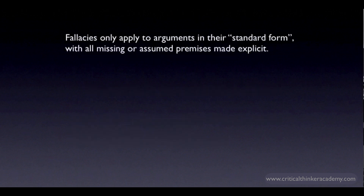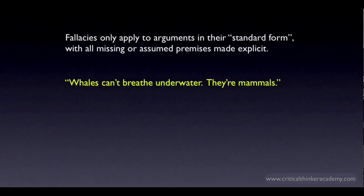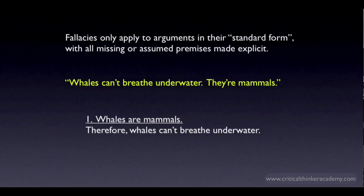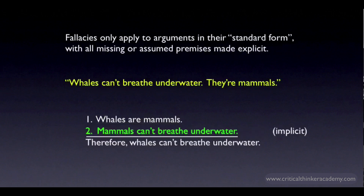An important point to remember about fallacies is that you can't judge an argument based on its superficial form as given, since we often leave out parts and rely on our audience to fill in the gaps. So, if I give an argument like this — whales can't breathe underwater, they're mammals — it would be unfair to say that it's bad because the logic is weak, since there's no stated connection between being a mammal and being able to breathe underwater. It would be unreasonable to evaluate the argument based on that interpretation. Why? Because it's obvious that the argument relies on an implicit premise: mammals can't breathe underwater. Only after you add this premise can you evaluate the argument — and in this case, the argument is good. Both premises are true and the argument is valid.